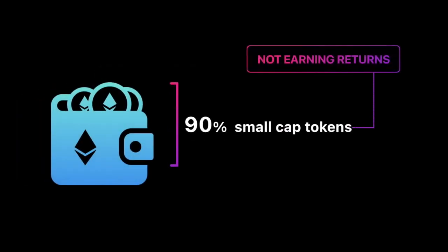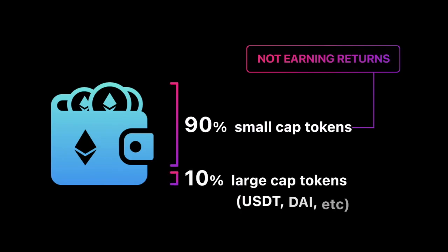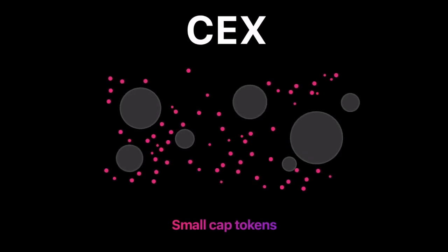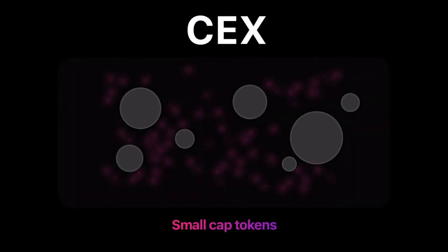Today, most small-cap tokens are not earning any returns for their owners. This represents the vast majority of tokens. Their liquidity is sitting in order books in centralized exchanges and is inaccessible.